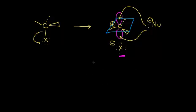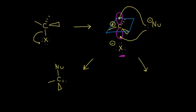Let's draw the results of a nucleophilic attack on our electrophile. The nucleophile attacks from the top, forming a bond with that carbon from the top. Once again, this changes the carbon back into an sp3 hybridized carbon.